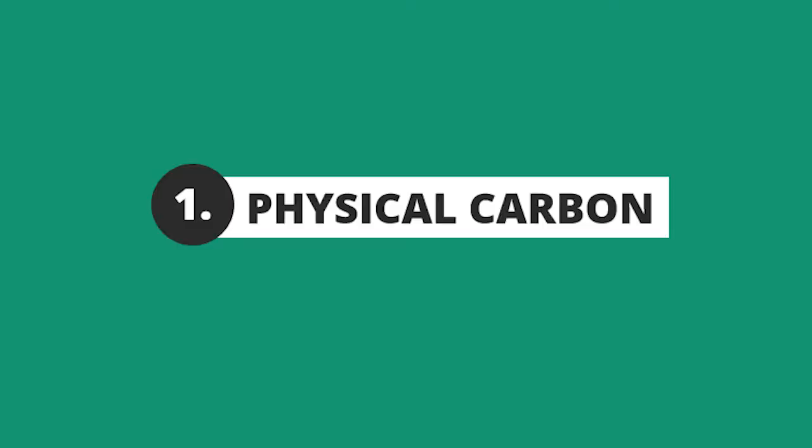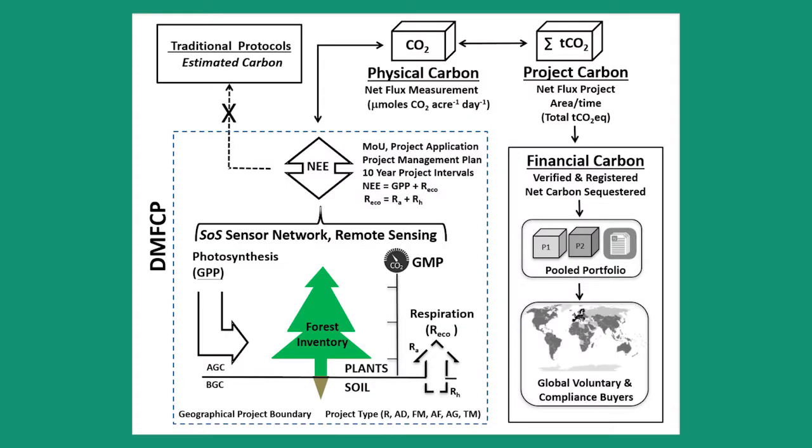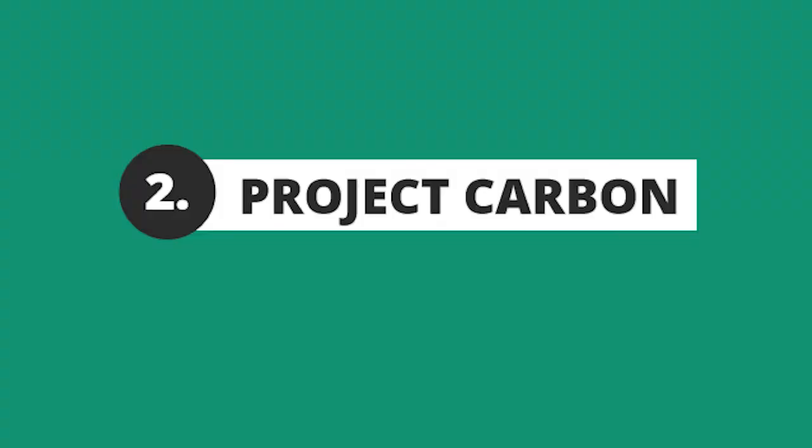The objective of the DMFTP is to generate rapid revenue to forest landowners on the spot in the forest. We do this by structuring the process in three steps. Step one: define physical carbon by deploying eddy covariance equipment and verifying CO2 flux. This is the material content of the project and cannot be accomplished remotely or by estimation.